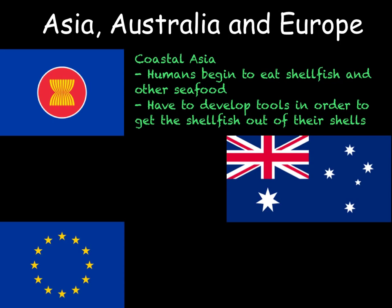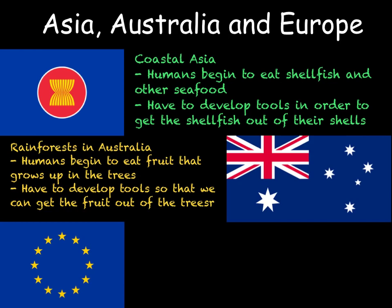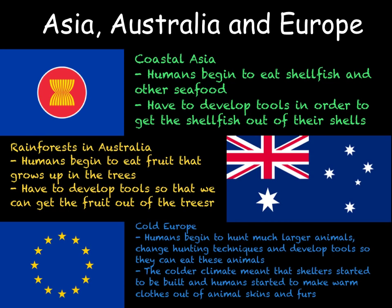In Australia, humans would have come across various different environments including rainforests, where they would have started to eat far more fruit growing on the trees. Again they would have had to invent new tools to reach it — for example, developing tools with long handles to knock fruit out of the tree. In Europe, the climate was much colder and the animals found there were a lot bigger. This meant new methods of hunting had to be devised, such as hunting in groups, and new tools like knives and saws were needed to prepare larger animals for eating. Because the climate was colder, more shelters had to be built, and it was around this time that modern humans started to cover themselves in animal skins, especially fur, to make warm clothes and survive these colder conditions.